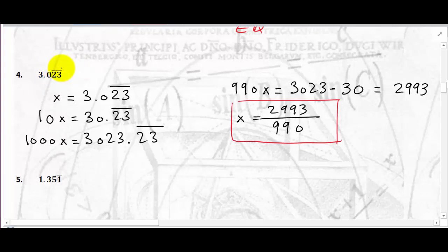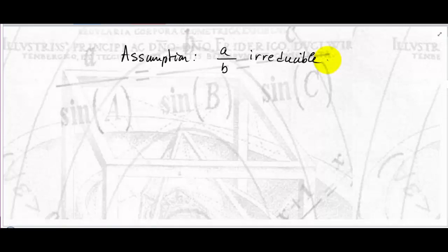Before we answer what an irrational number is, let's make an important assumption. Anytime you're given a ratio of two integers, you can always assume it is irreducible. If it's not, just reduce it, and at some point you'll find an irreducible ratio. So if I'm given a ratio of two integers, I can always assume they are co-prime — their only common divisor is one.